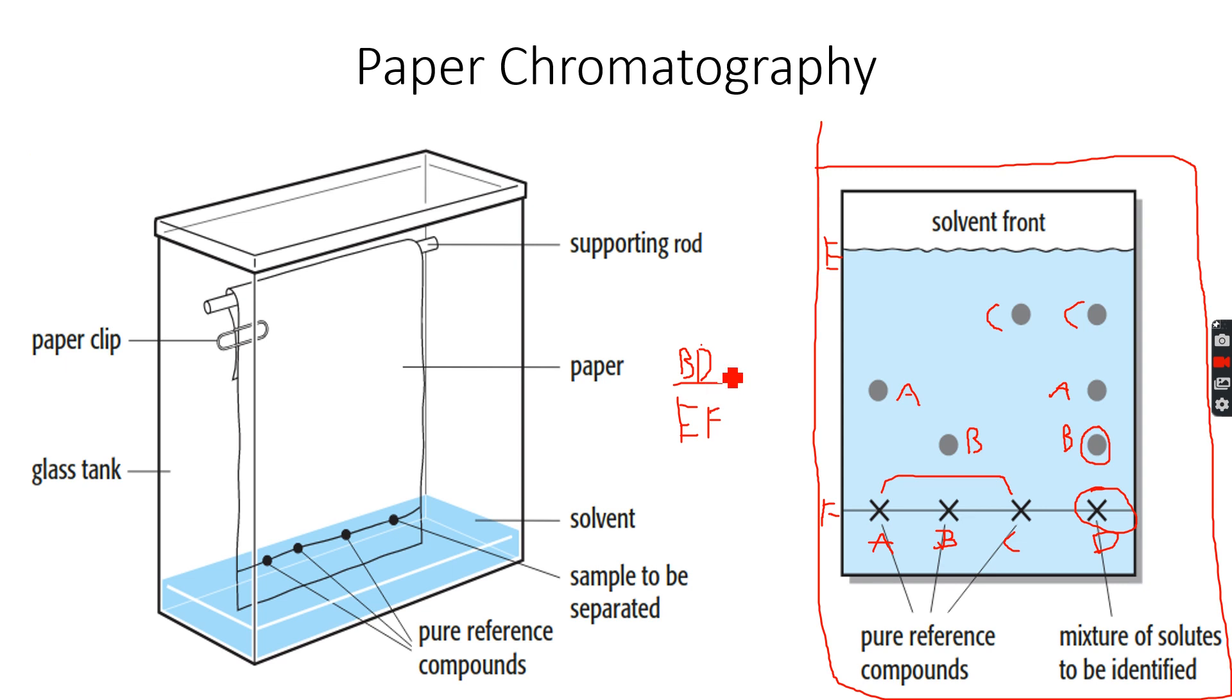So this formula that I have done over here will give me the RF value for component B—RF value of B in this particular solvent. Let's take this solvent as solvent X, so this will give me the RF value of B in solvent X. RF value is nothing but the retention factor or retardation factor, as it is called, and it is basically the extent to which the solute travels in the solvent.